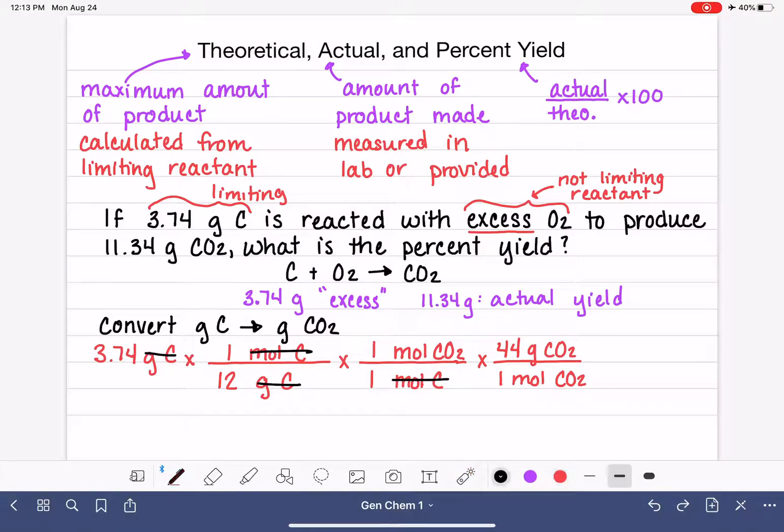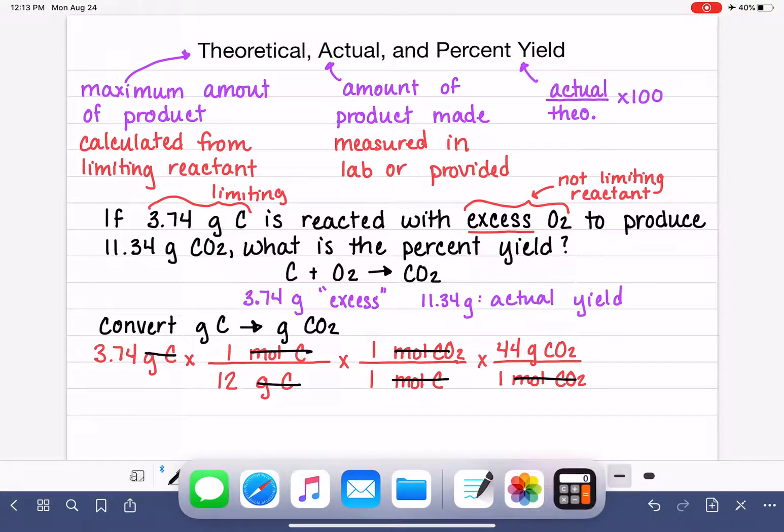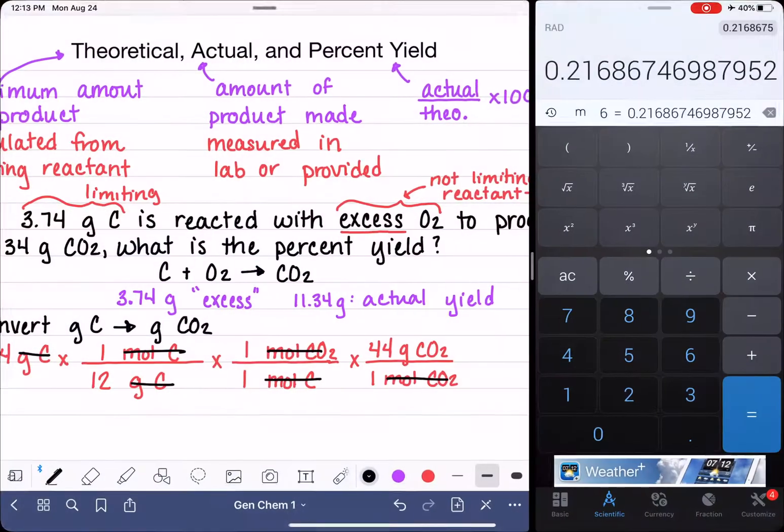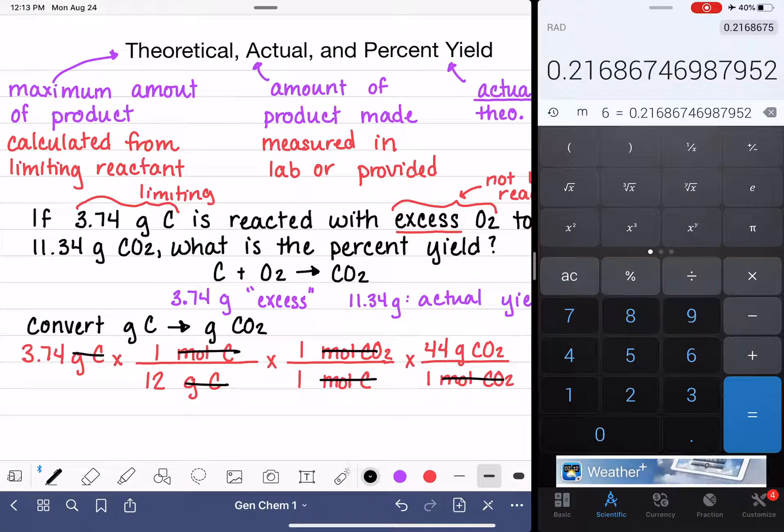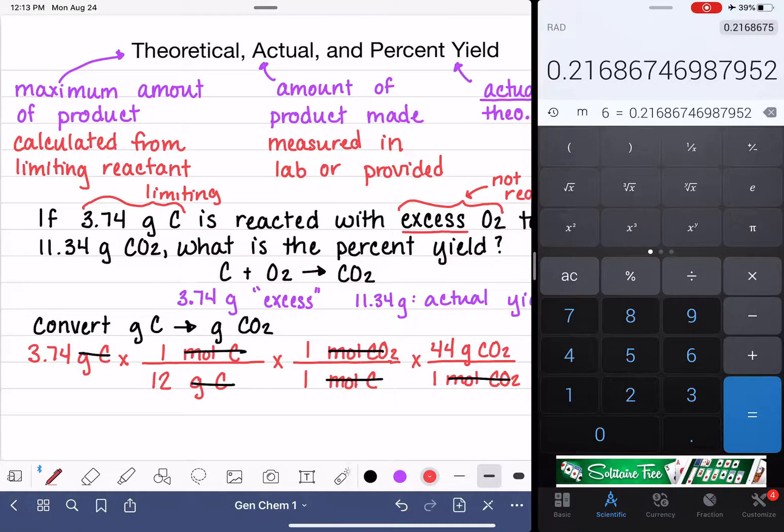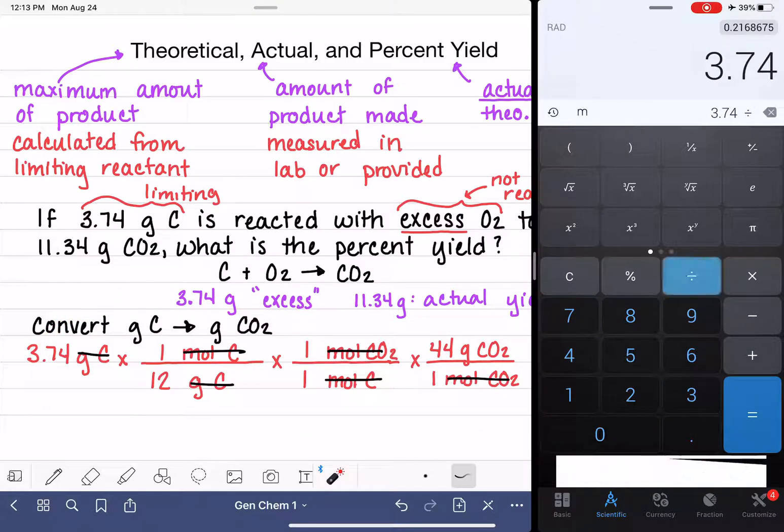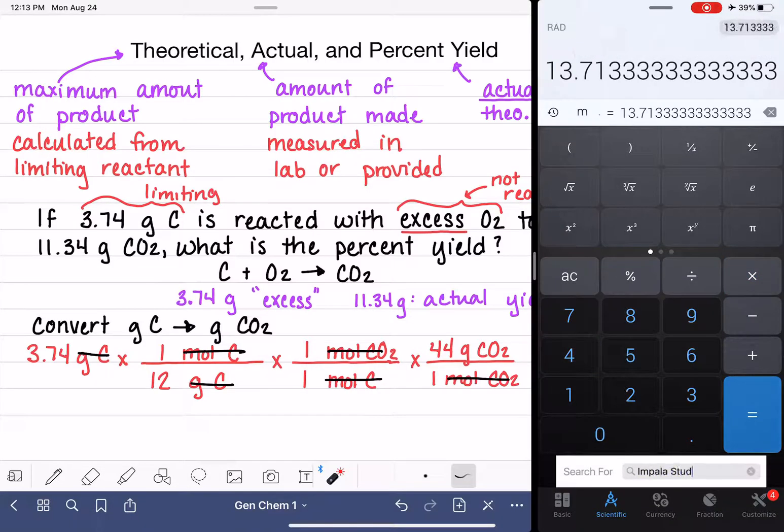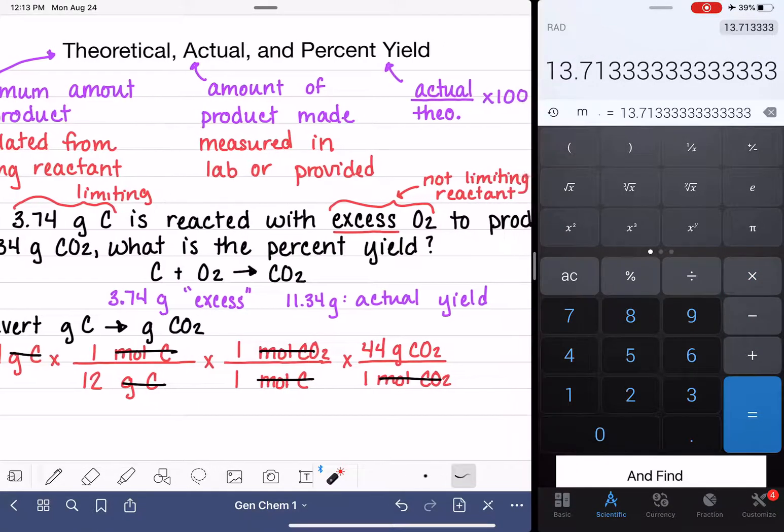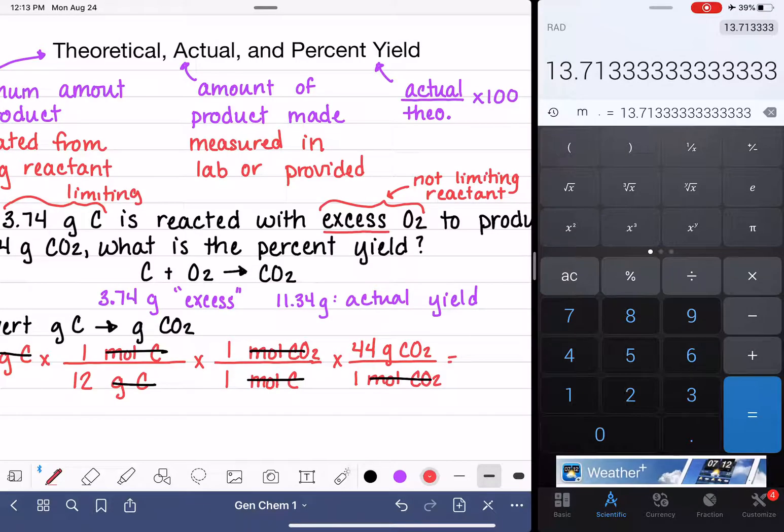And this last step cancels out our moles of CO2. So we're ready for the calculator to figure out exactly how many grams of CO2 we are theoretically going to make in this reaction. So we're going to basically just do all the math that we set up right here. 3.74 divided by 12 times 44. This is our theoretical yield. 13.7 grams of CO2.